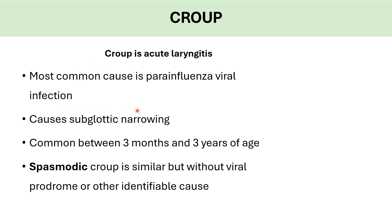This virus infection causes subglottic narrowing and inflammation, leading to difficulty breathing. Croup is common in younger children between three months and three years of age. Spasmodic croup is similar but without viral infection or prodrome — it comes on suddenly with no identifiable cause.